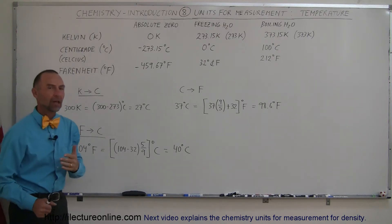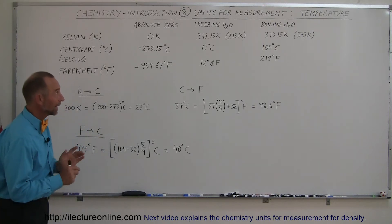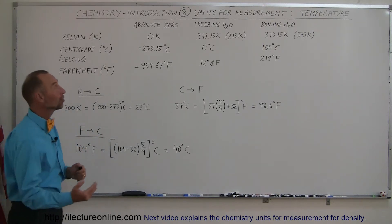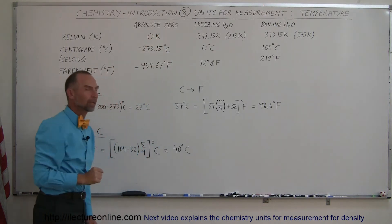The Kelvin scale is based on the absolute zero. The coldest it can get anywhere in the universe, under any circumstances, is what we call absolute zero, and we call that the zero point for the Kelvin scale.